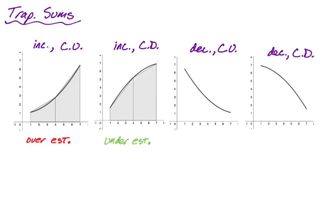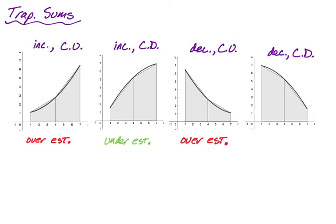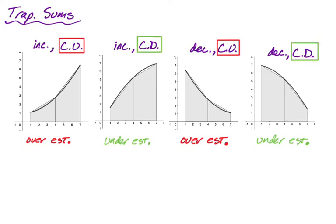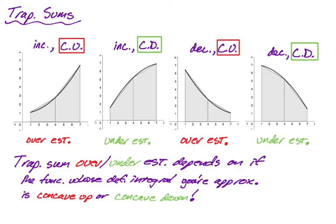Concave up gave us over and concave down gave us under. Let's see if that's consistent with decreasing. For decreasing concave up, we are getting an overestimate because we're just a little above. And then for decreasing concave down, you can see that we're always a little bit under it — we're getting an underestimate. So in this case, it's not the increasing and decreasing that matters — it's actually the concavity. When we are concave up, we're getting overestimates. When we are concave down, we're getting underestimates, which means our trapezoidal sum depends on the concavity.